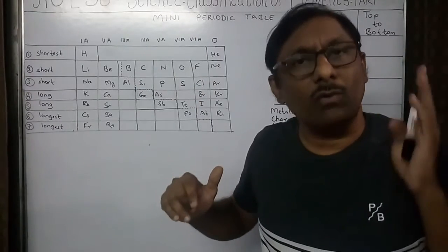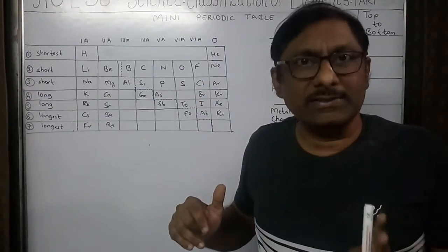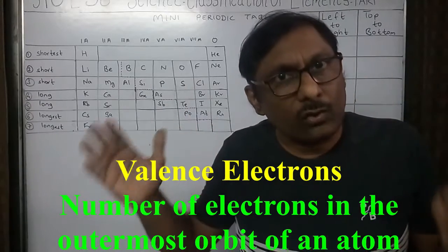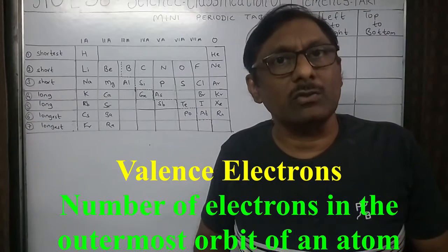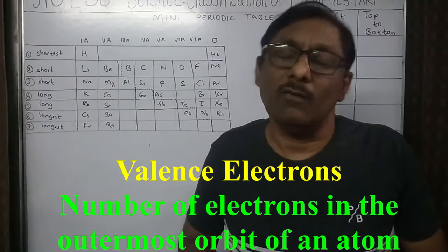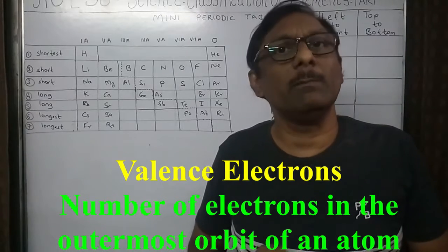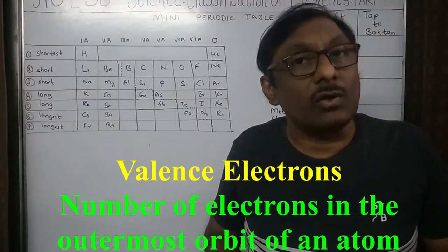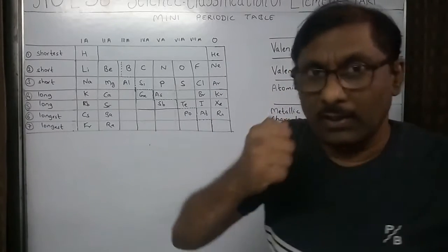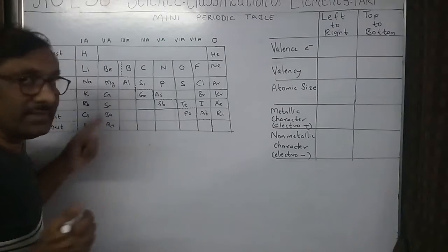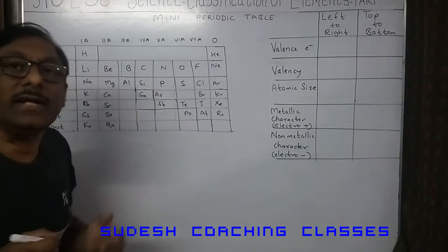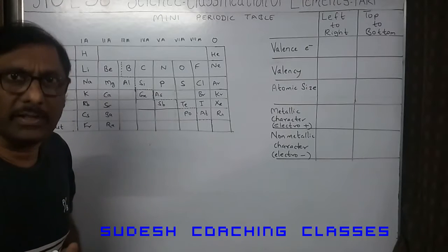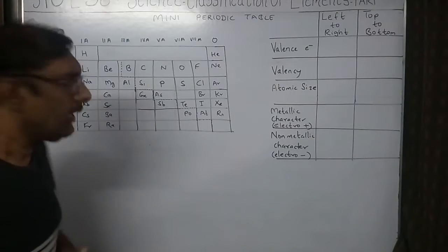First we are going to study valence electrons. Bachchon, jitne electrons outermost orbit mein hote hain, atom ke — unko bolte hain hum log valence electrons. The number of electrons in the outermost shell of any atom is called its valence electrons. In the periodic table, the numbers 1, 2, 3, 4 denote the number of electrons in the outermost orbit.